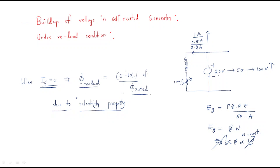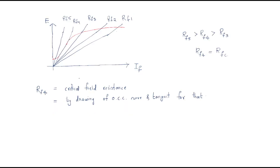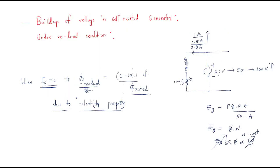This is the main reason for the self-excited generator's voltage buildup. If there is no residual flux, there is no generated EMF in the self-excited generator. That's why residual flux has higher priority and is very important.